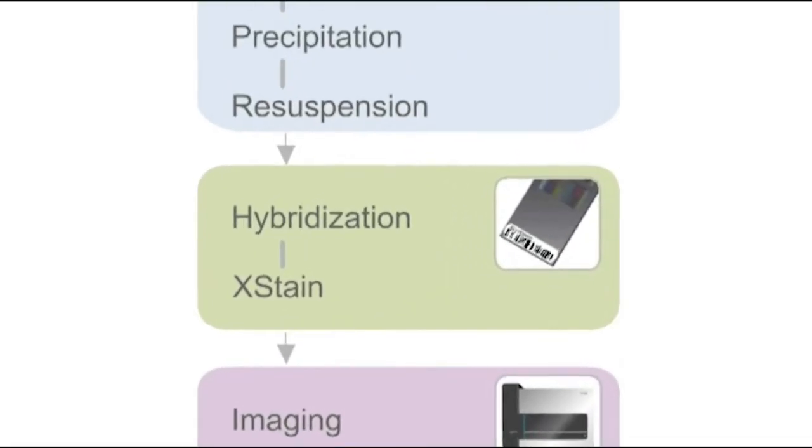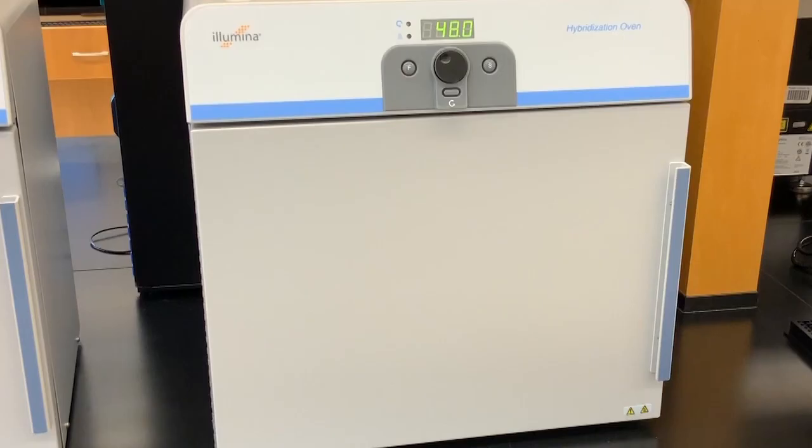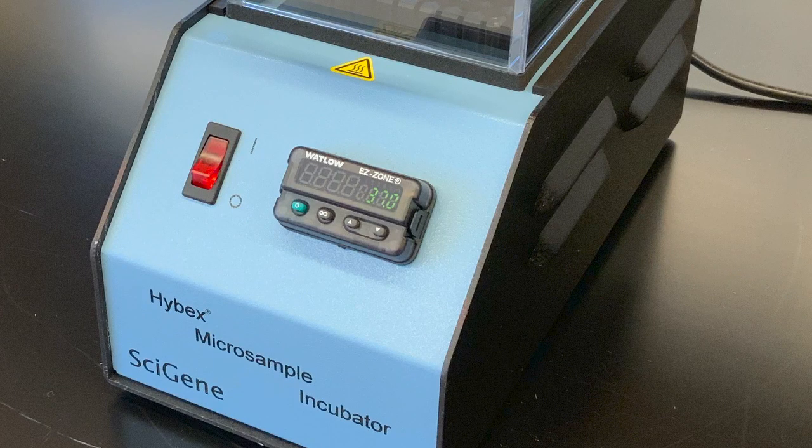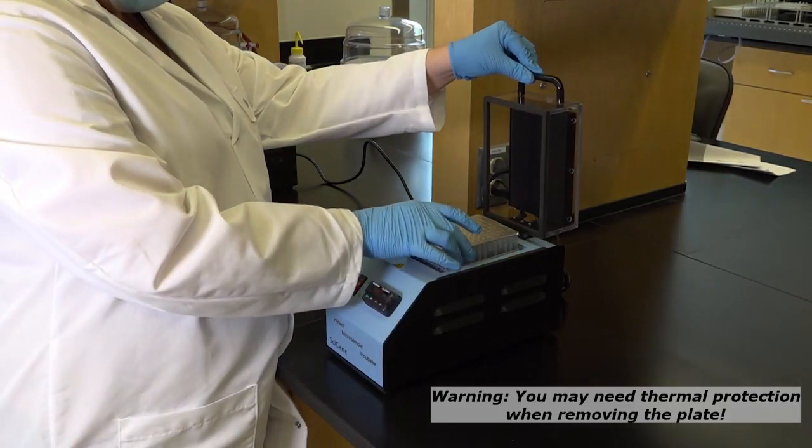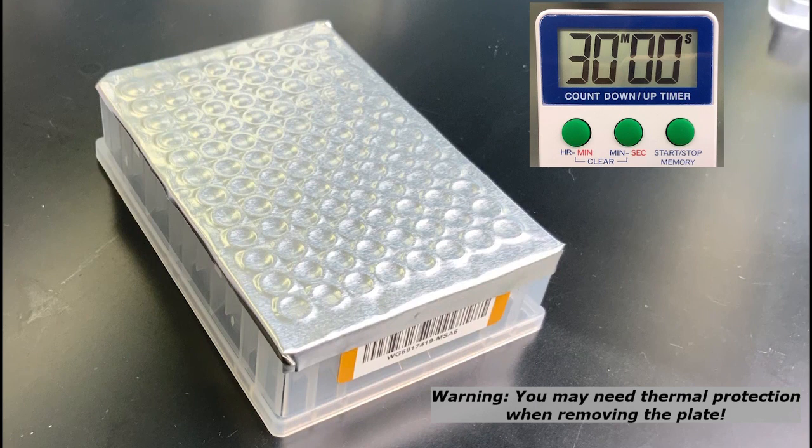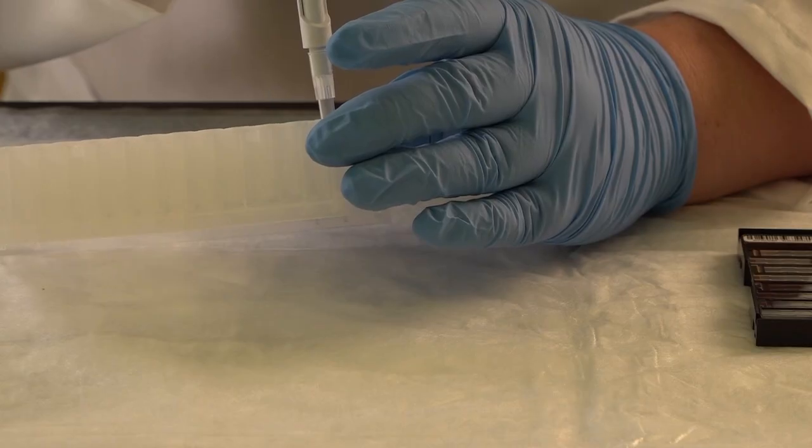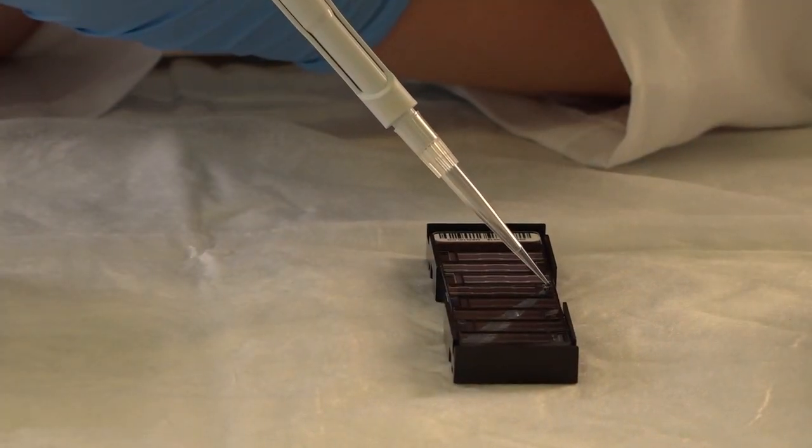The next step in the Infinium assay is hybridization. If not already set from the resuspend step, set the hybridization oven to 48 degrees Celsius and preheat the heat block to 95 degrees Celsius. Following the incubation at 95 degrees Celsius, allow the amplification plate to sit at room temperature for 30 minutes. Pulse spin the plate prior to proceeding with hybridization. In the hybridization step, the sample is removed from the microtiter plate and applied to the bead chip.